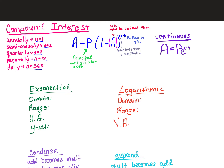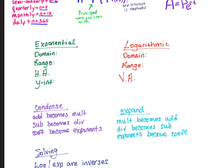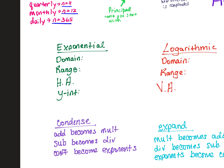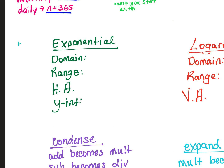Next, we move on to graphs of exponential and logarithmic functions. For exponential functions, when your base is greater than 1, the graph goes up from left to right. If your base is less than 1 but greater than 0, it goes down from left to right. Keep that in mind as you look at these.